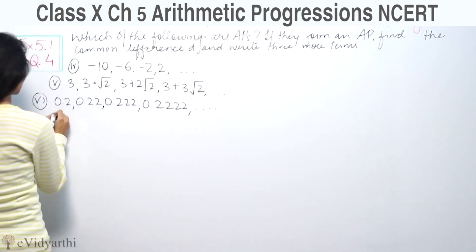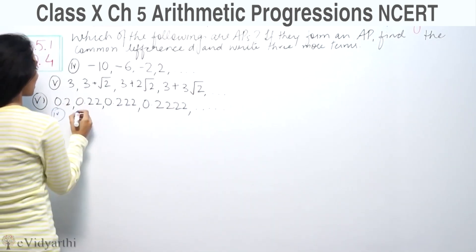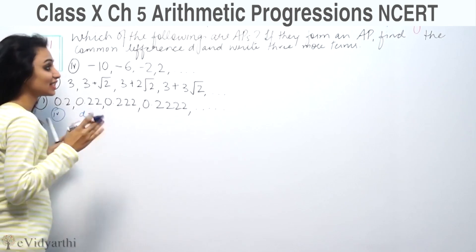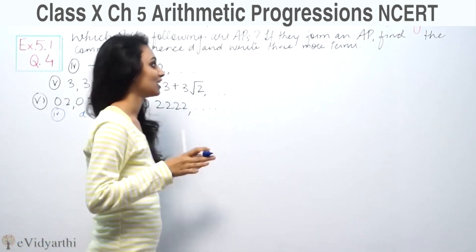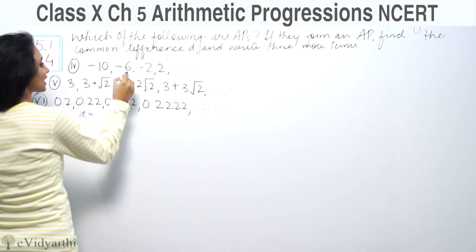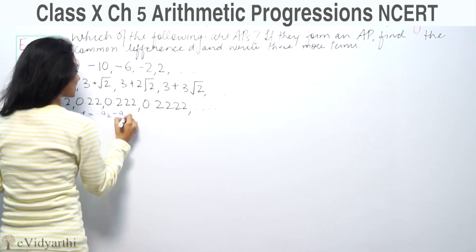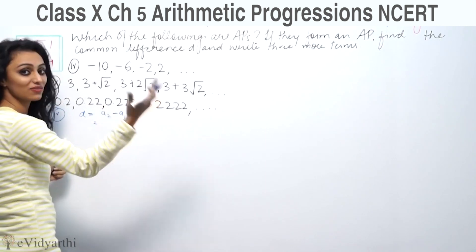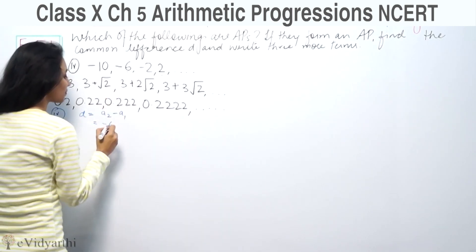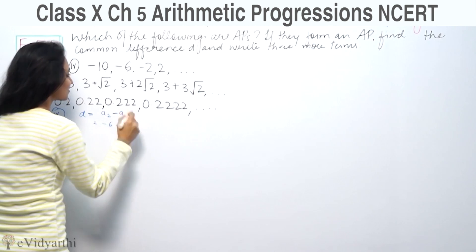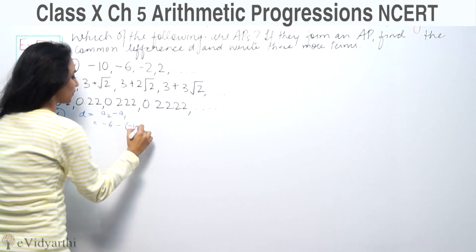So first part (i). To check if it's an AP, we calculate the common difference. This is the first term, second term, third term, fourth term. Common difference is A2 minus A1. The second term is -6, and A1 is -10.